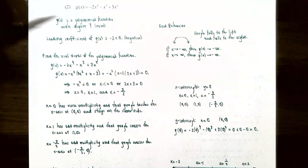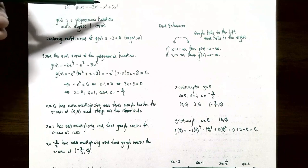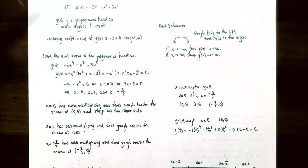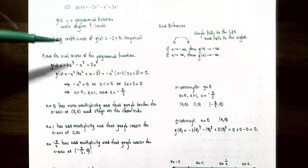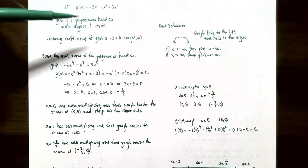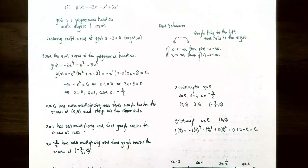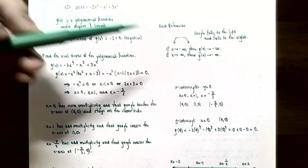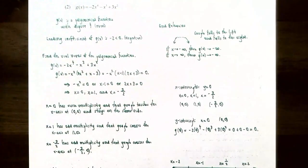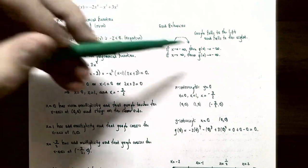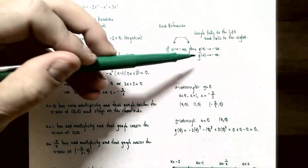Number two: graph g(x) = -2x⁴ - x³ + 3x². The degree is four (even) and the leading coefficient is -2 (negative). Since the degree is even with a negative leading coefficient, the graph falls on both ends: as x approaches negative infinity, g(x) approaches negative infinity, and as x approaches positive infinity, g(x) also approaches negative infinity.